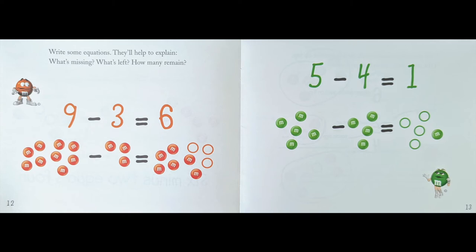Write some equations, they'll help to explain what's missing, what's left, how many remain. 9 - 3 = 6. 5 - 4 = 1.